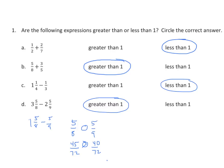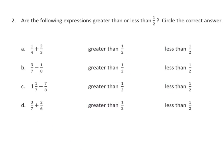Now: are the following expressions greater than or less than 1 half? Circle the correct answer. We know that 2 thirds is greater than 1 half, so if one of our addends is greater than 1 half, our sum is certainly going to be greater than 1 half.